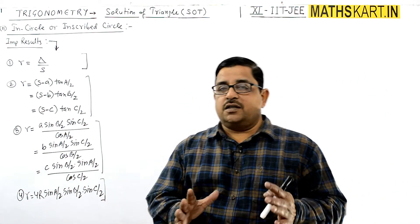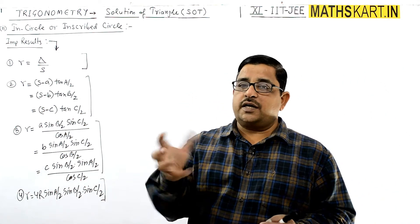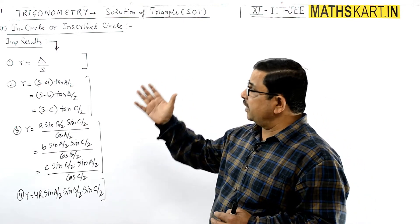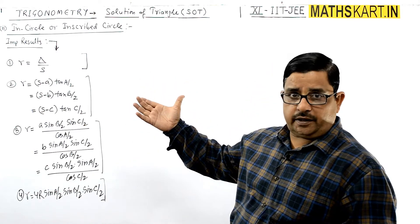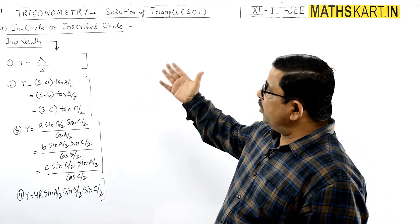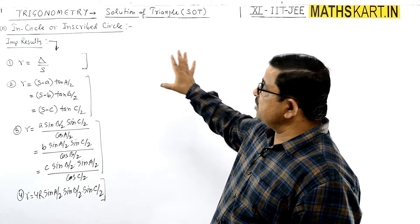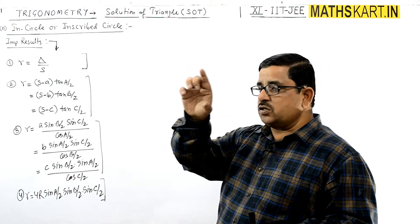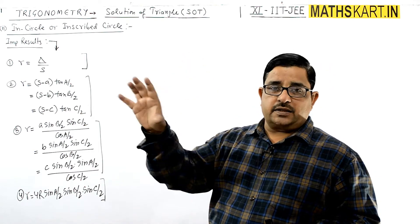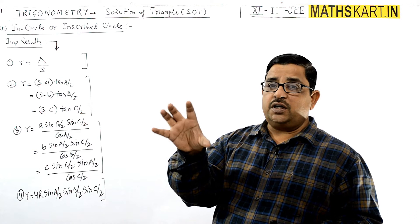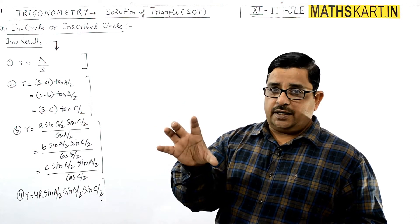The next circle is connected with the triangle — the second topic is the incircle, also called the inscribed circle, because the circle is inscribed into the given triangle.